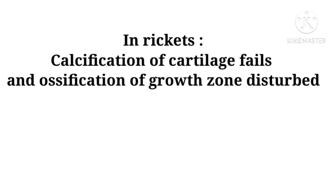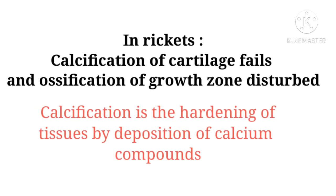In Ricketts, calcification of cartilage fails and ossification of the growth zone is disturbed. Calcification is the hardening of tissues by the deposition of calcium compounds or any mineral. But in Ricketts, there is no calcification of cartilage — cartilage fails to calcify, meaning cartilage doesn't have any kind of minerals or calcium compounds in it.